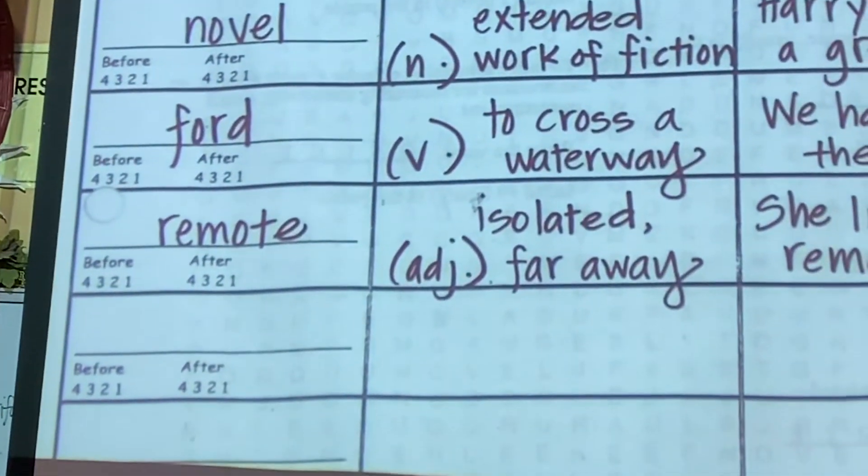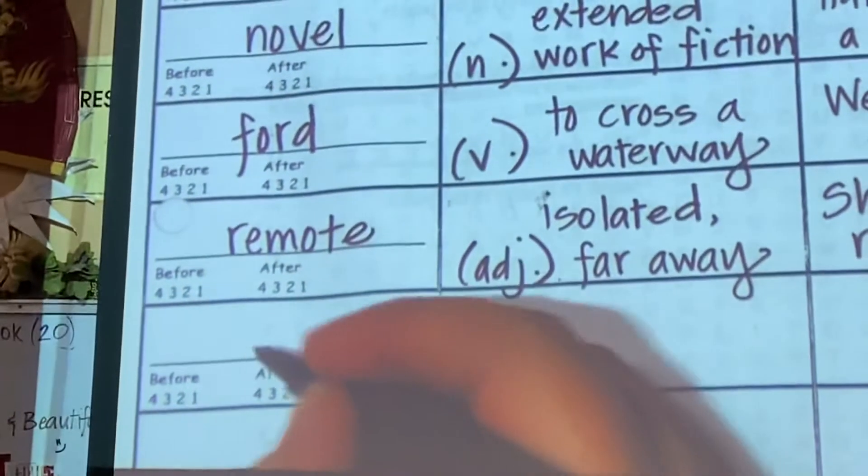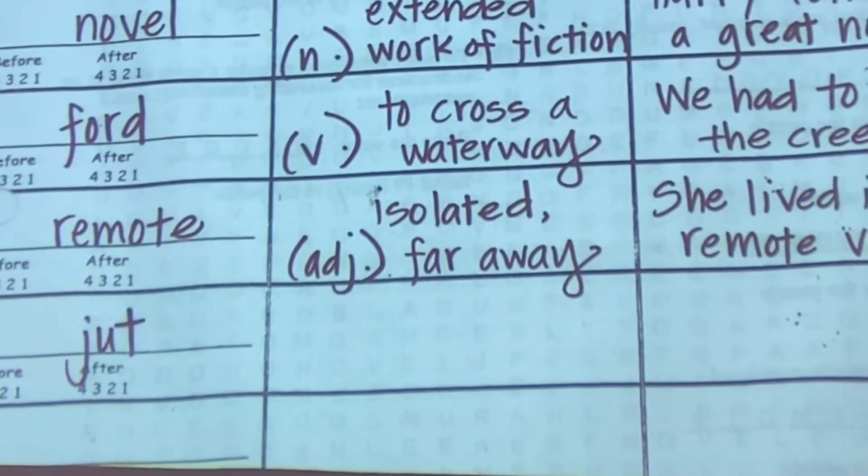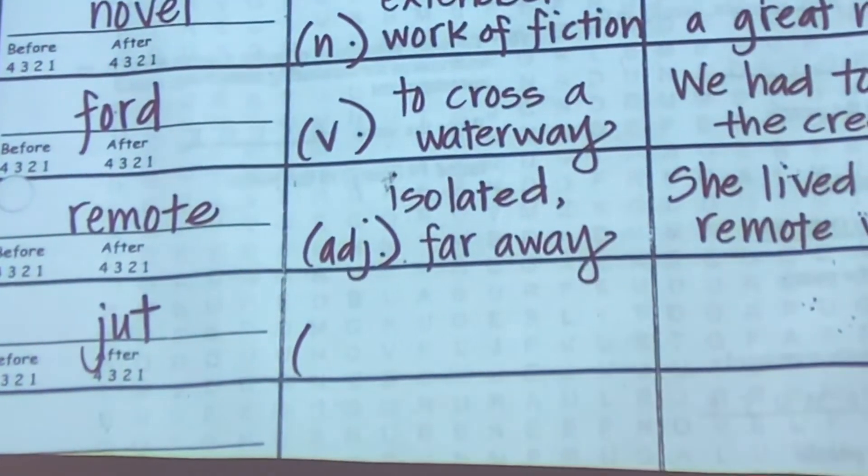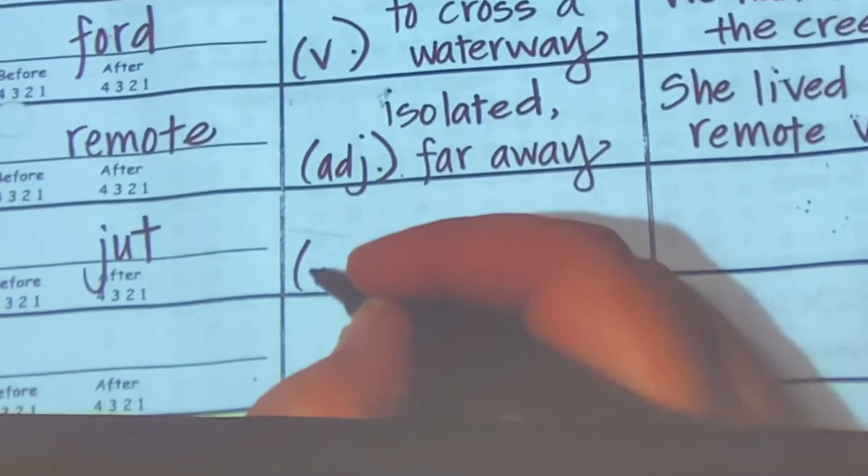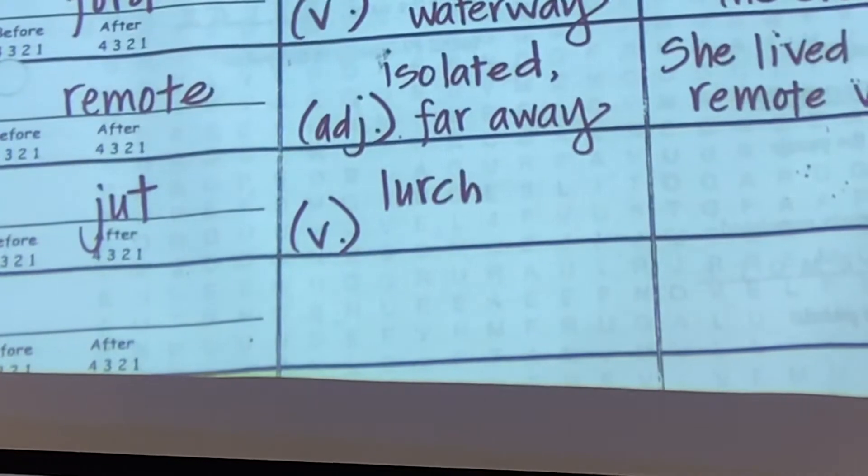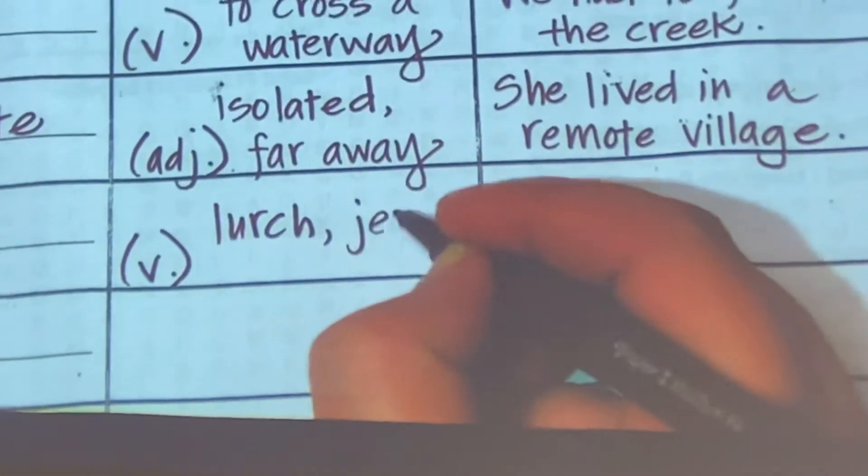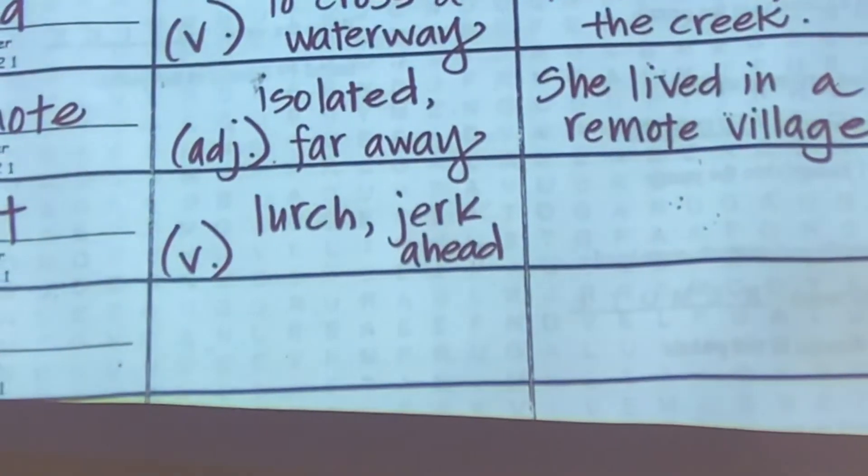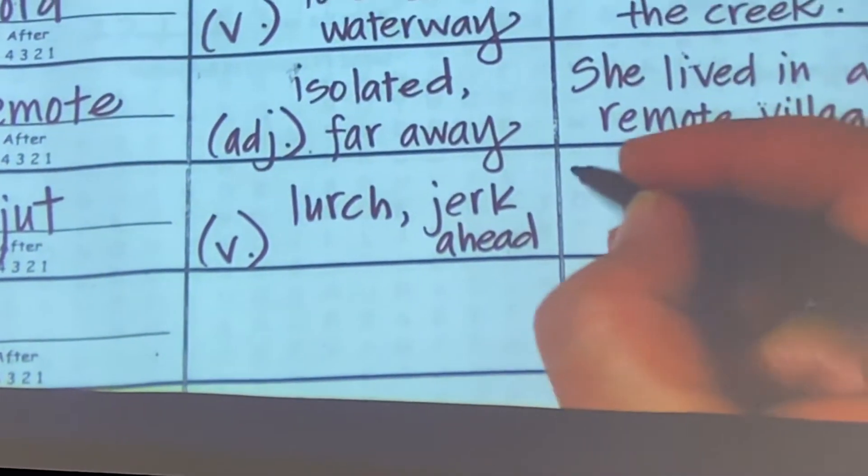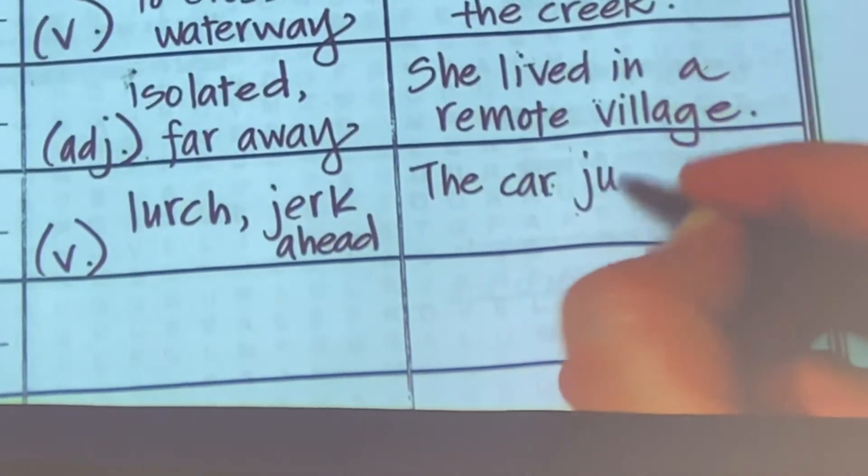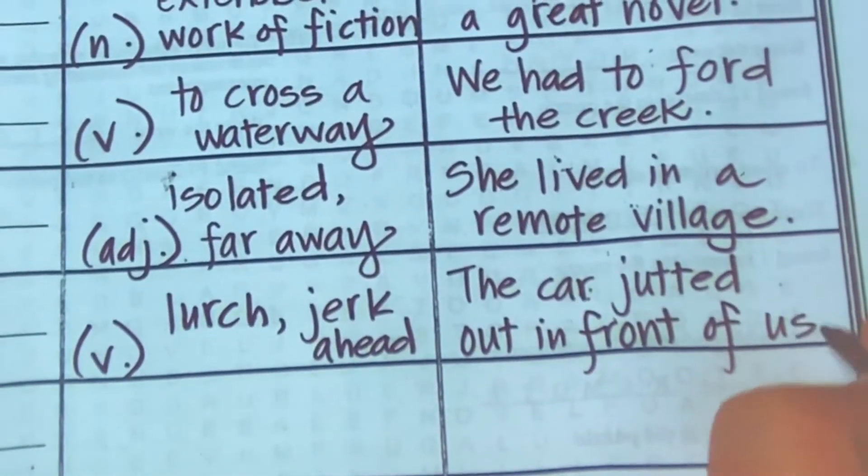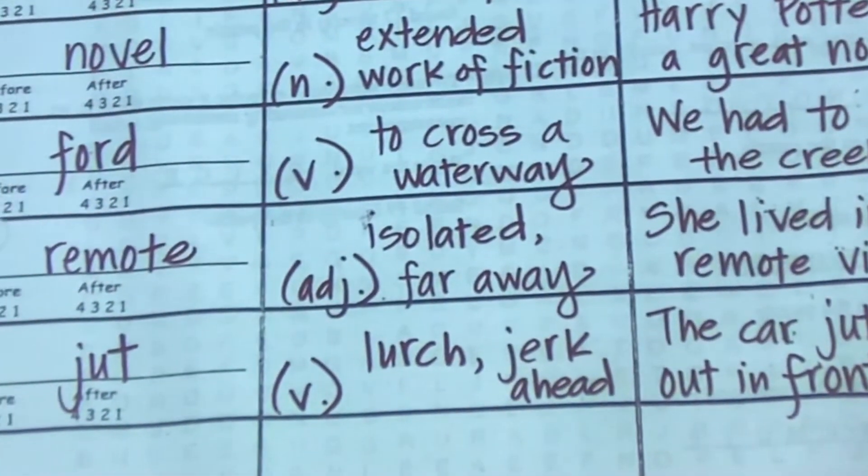This next one is an onomatopoeia, and it's kind of a funny word to me. Jut. A sudden move. If I'm going to jut out in front of you, it means to lurch or to go ahead. A sharp, sudden move. To lurch ahead, to jerk ahead. You've jutted out. I feel like I have to make a sound effect every time I say it. Lurch. You could say the car jutted out in front of us. If we could keep the side talking down, that would be great. Almost there.